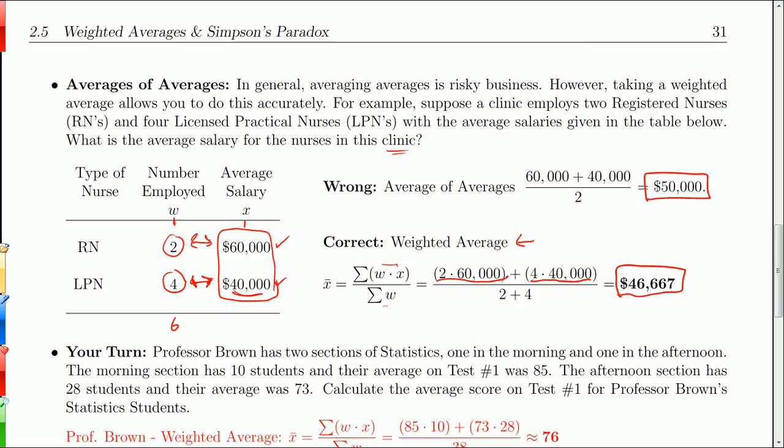So you should always avoid averaging averages. And if you're going to try to average averages, you need to weight them with the number of values in each category.